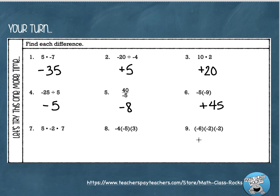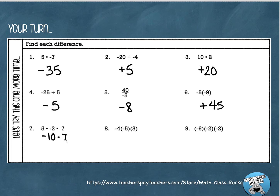For these last three, we can take them one step at a time. For number 7: I'm going to do 5 times negative 2, which gives me negative 10 to start with. Then I bring down that times 7. Negative 10 times positive 7 — these are different signs — so my answer will be negative 70.